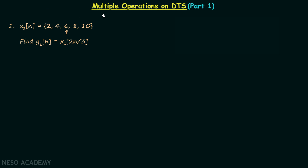In this lecture we will perform multiple operations on discrete time signals. The first signal is x1n, which is equal to 2, 4, 6, 8, 10, and 6 is the value of the signal when n is equal to 0, indicated by the arrow below 6. We are required to find a new discrete time signal y1n, where y1n is equal to x1(2n/3), meaning we perform multiple operations on x1n to obtain y1n.